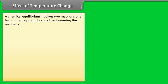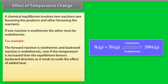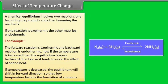Effect of temperature change: A chemical equilibrium involves two reactions — one favoring products and the other favoring reactants. If one reaction is exothermic, the other must be endothermic. For example, if the forward reaction is exothermic and the backward reaction is endothermic, then if temperature is increased, the equilibrium favors the backward direction to undo the effect of added heat. If temperature is decreased, the equilibrium shifts in the forward direction. So low temperature favors the formation of ammonia.